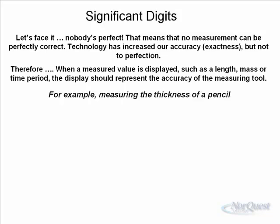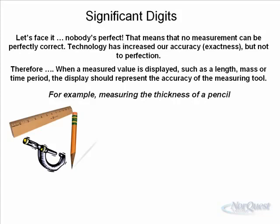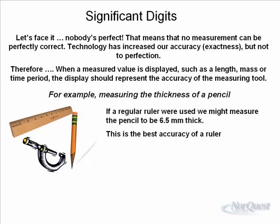So for example, measuring the thickness of a pencil, we could use a ruler to measure the thickness of a pencil. And we might measure that. If we really look carefully, it might measure out to be 6.5 millimeters, which would be a reasonable estimate with a wooden ruler.